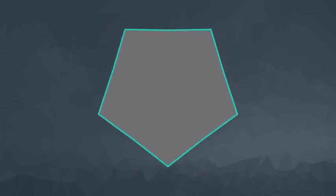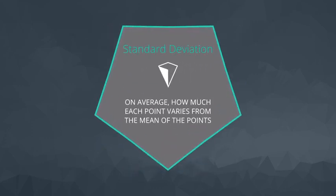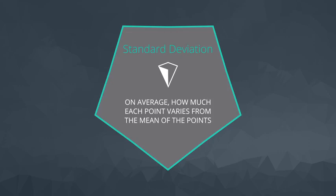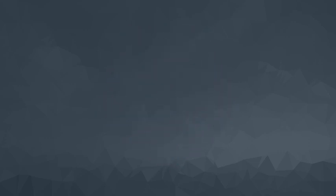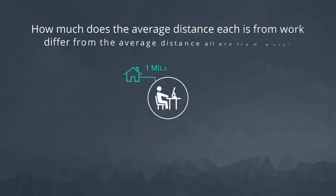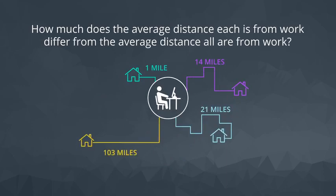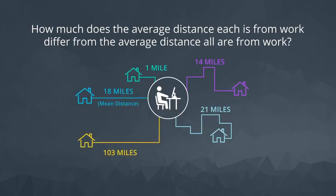The standard deviation is, on average, how much each observation varies from the mean. For this example, this is how much, on average, the distance each person is from work differs from the average distance all of them are from work.